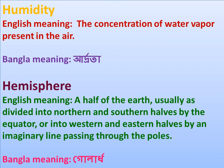Hemisphere: a half of the earth, usually as divided into northern and southern halves by the equator, or into western and eastern halves by an imaginary line passing through the poles. Bangla meaning: kolardo.